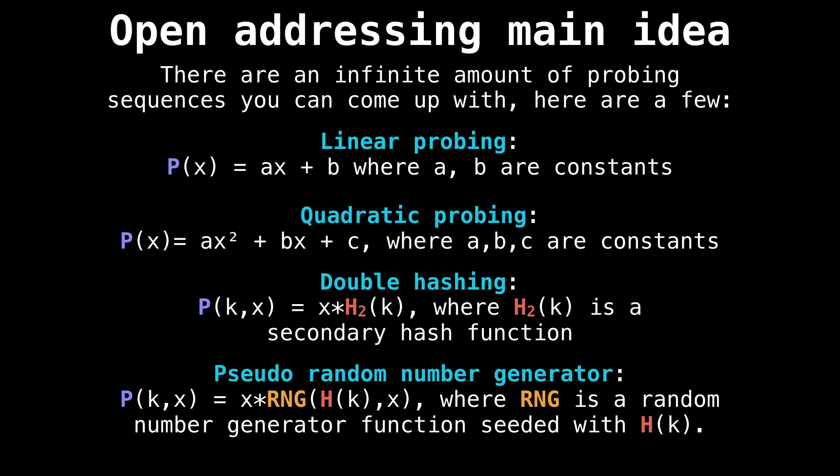Then there's double hashing, which is super neat, actually. What we do is we define a secondary hash function on our key, find its value, and then use that inside the probing function.